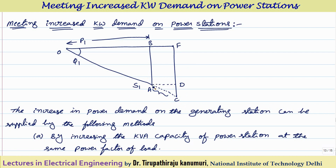The second procedure is: do not increase the plant capacity. Instead, I will improve the power factor. So the power plant capacity remains the same — S is the same — and I am improving the power factor. When you improve the power factor, with center O and radius OA, draw a circle, and this circle will intersect at a new point.